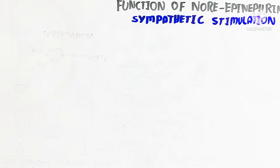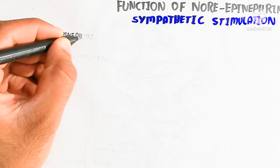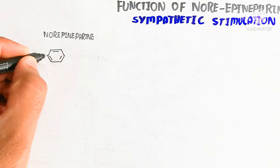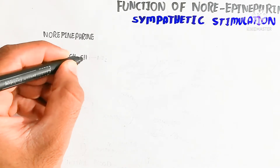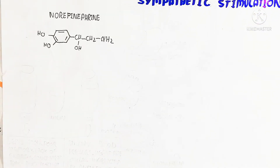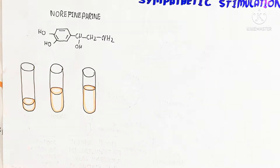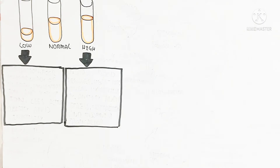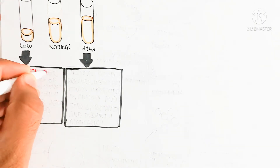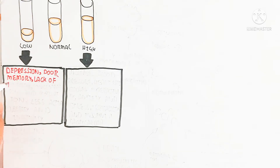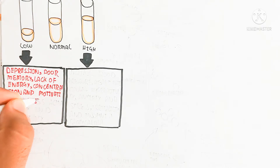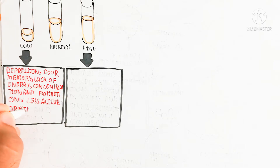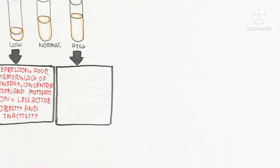Norepinephrine has a chemical formula containing 3 hydroxyl groups. Here you can see the low, normal, and high levels of norepinephrine and epinephrine. At normal levels there are no complications. At low levels it will cause depression, poor memory, lack of energy, lack of concentration and motivation, low activity, and obesity.